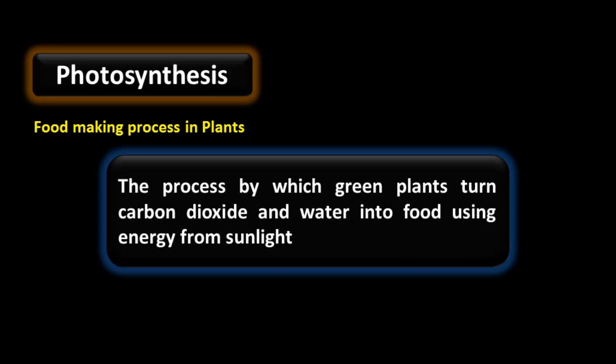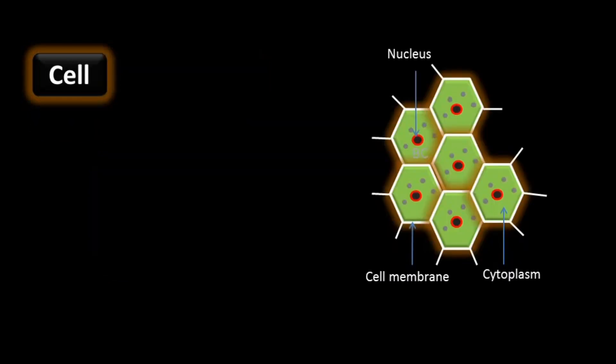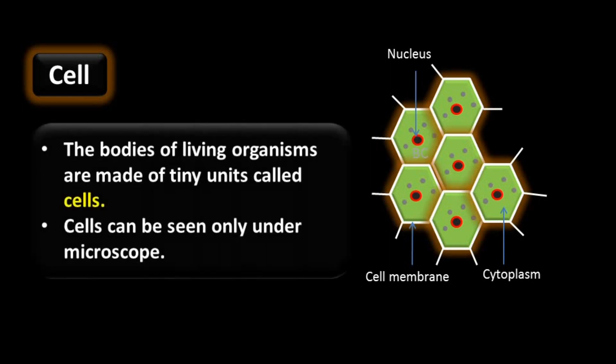This process takes place inside the leaf of the plant. Leaves have special types of cells called chlorophylls. Cells have a nucleus at the center, a membrane around their body, and the nucleus is located in jelly-like material known as cytoplasm. The bodies of living organisms are made of tiny units called cells, so cells are the fundamental unit of life.